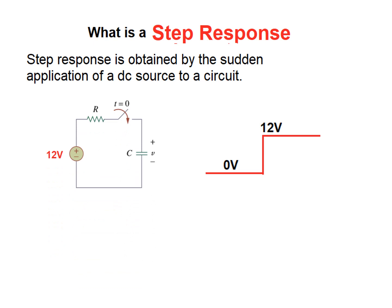This is the circuit. The switch is open. The moment we close this switch, this 12 volt is applied across the capacitor. If you see in this diagram, before T equal to 0 the voltage applied is 0, and at T equal to 0 the voltage applied is 12 volt. So this is like a step, and that is why this will be called a step input or step response of the circuit.